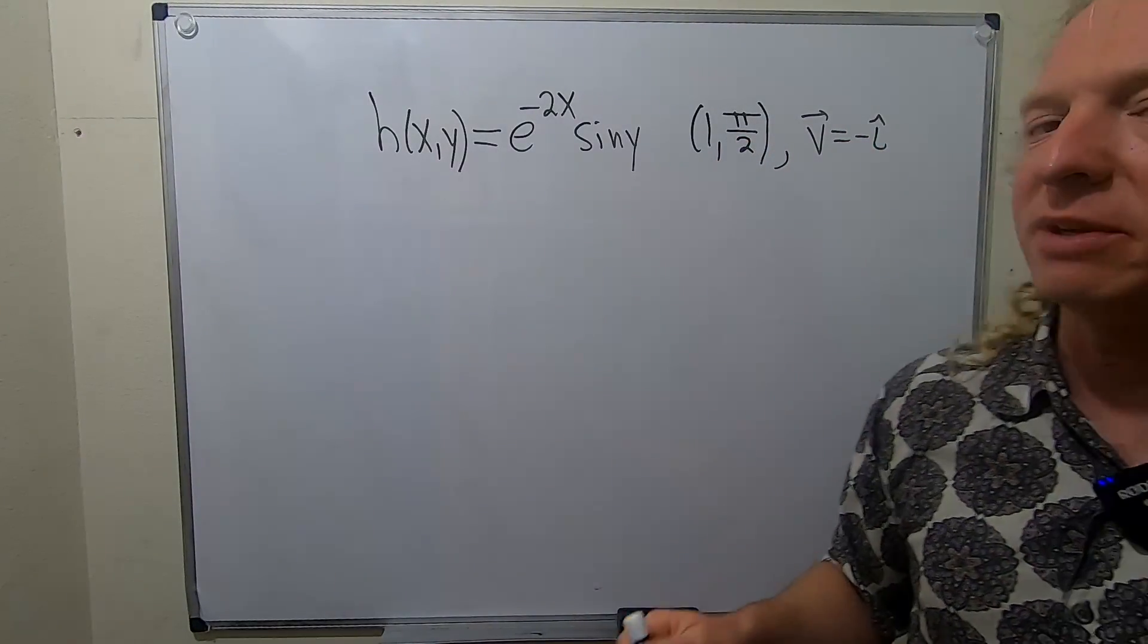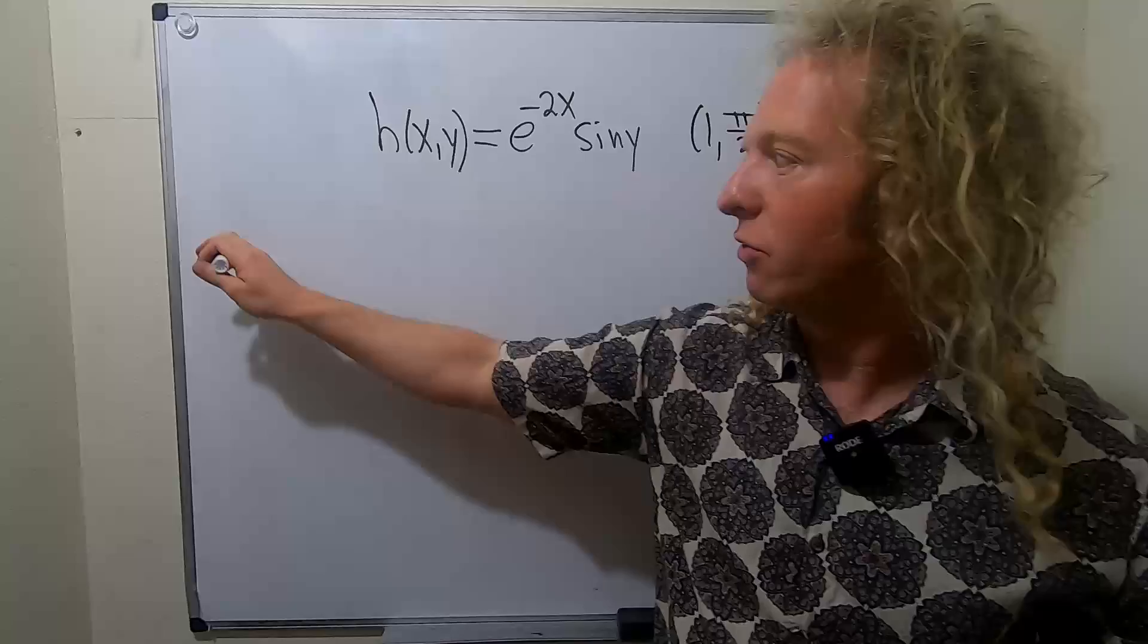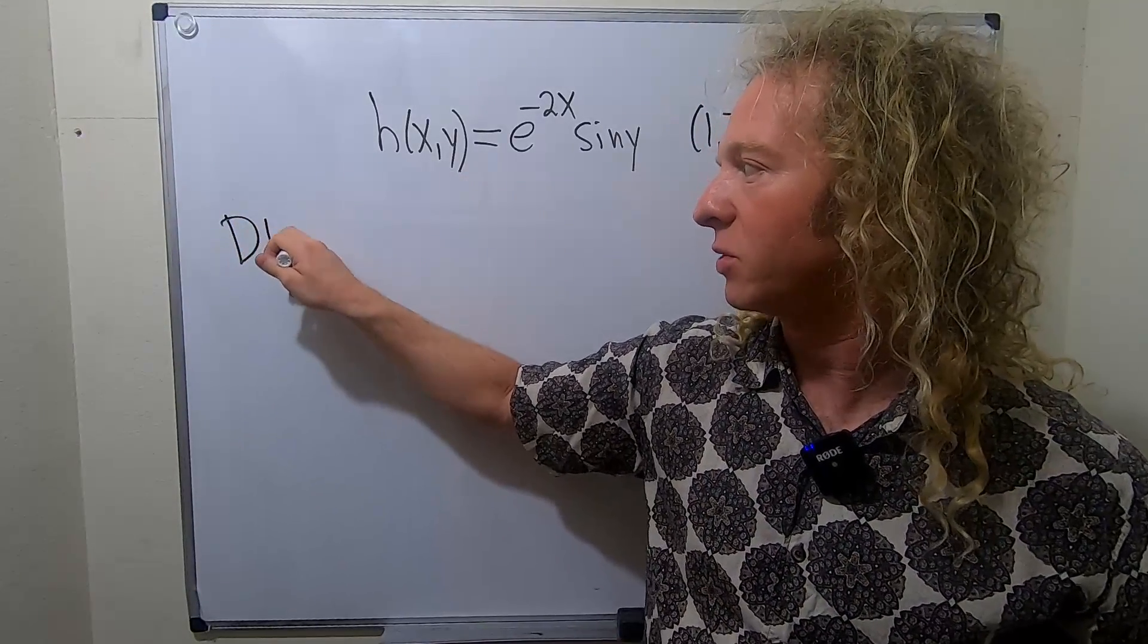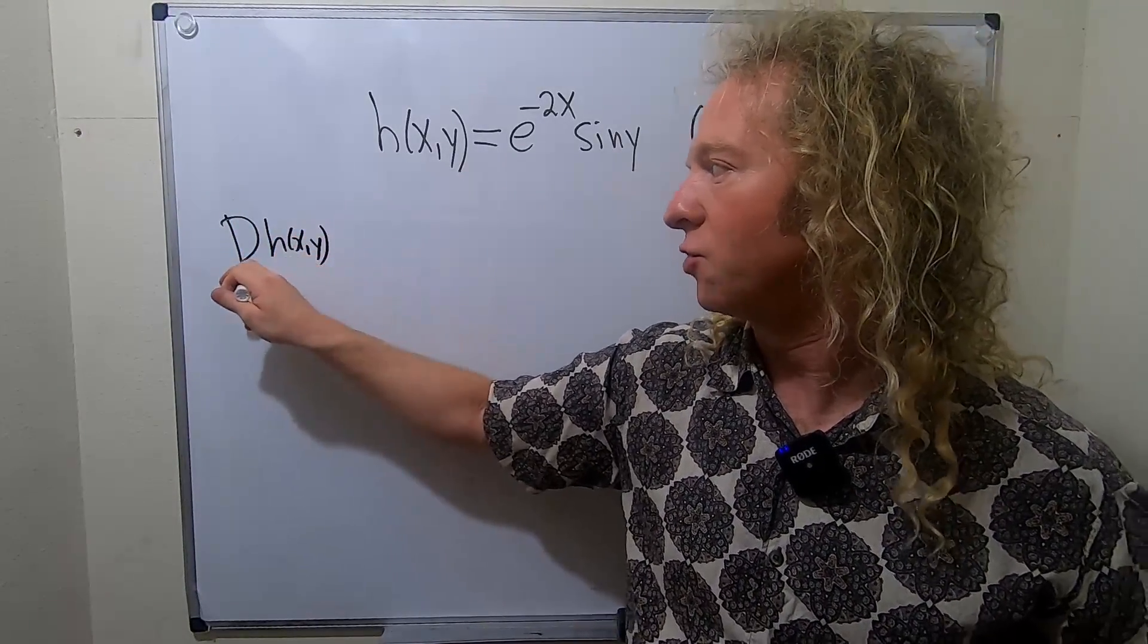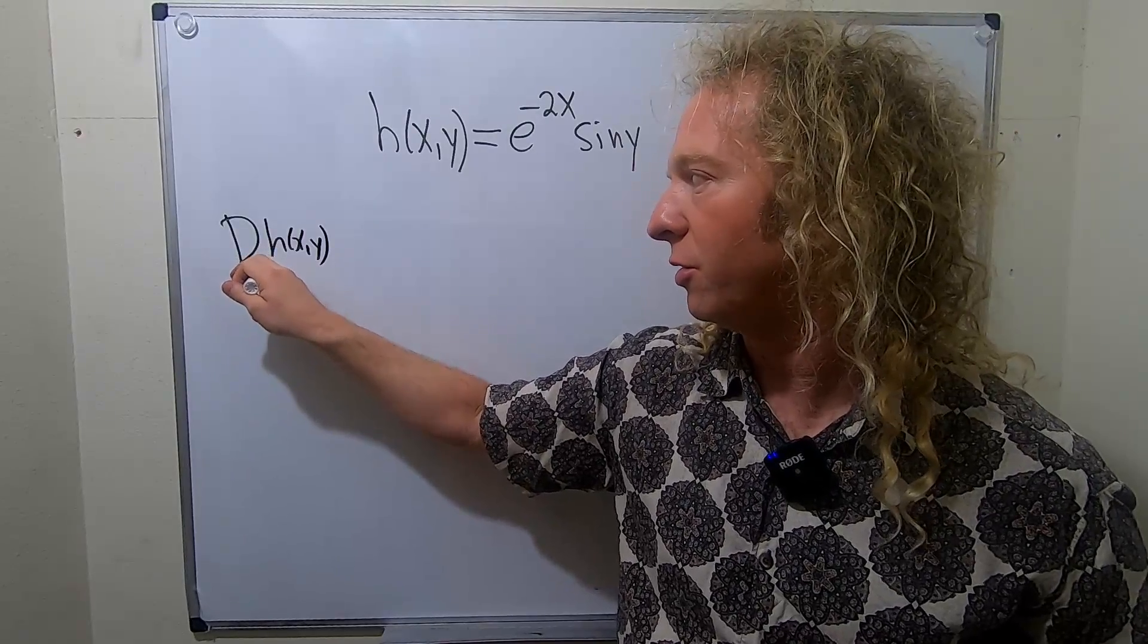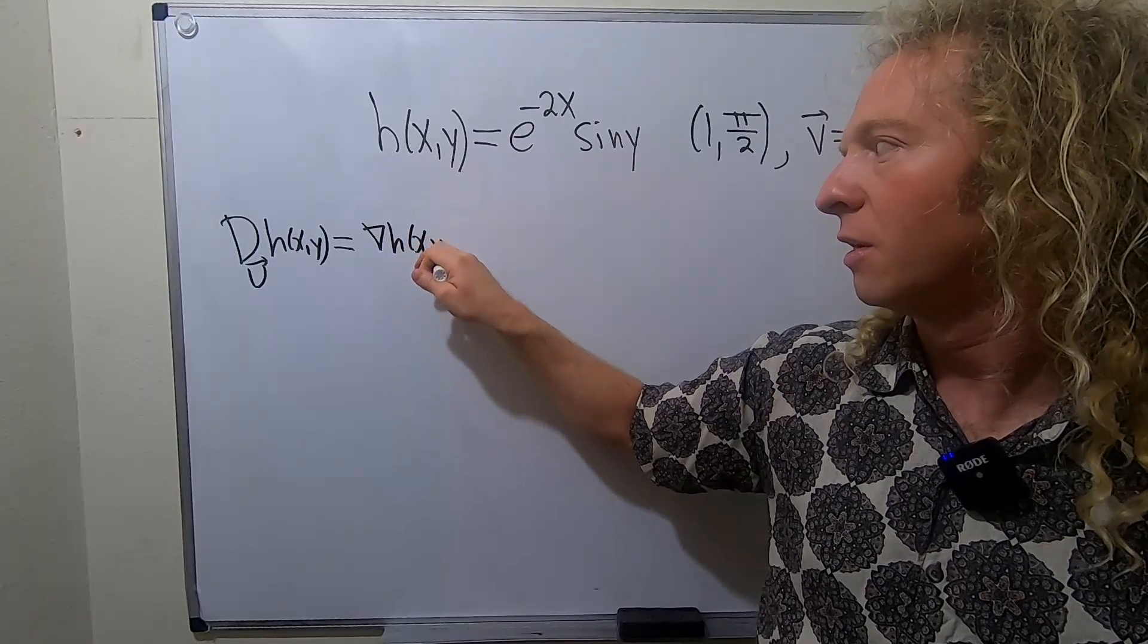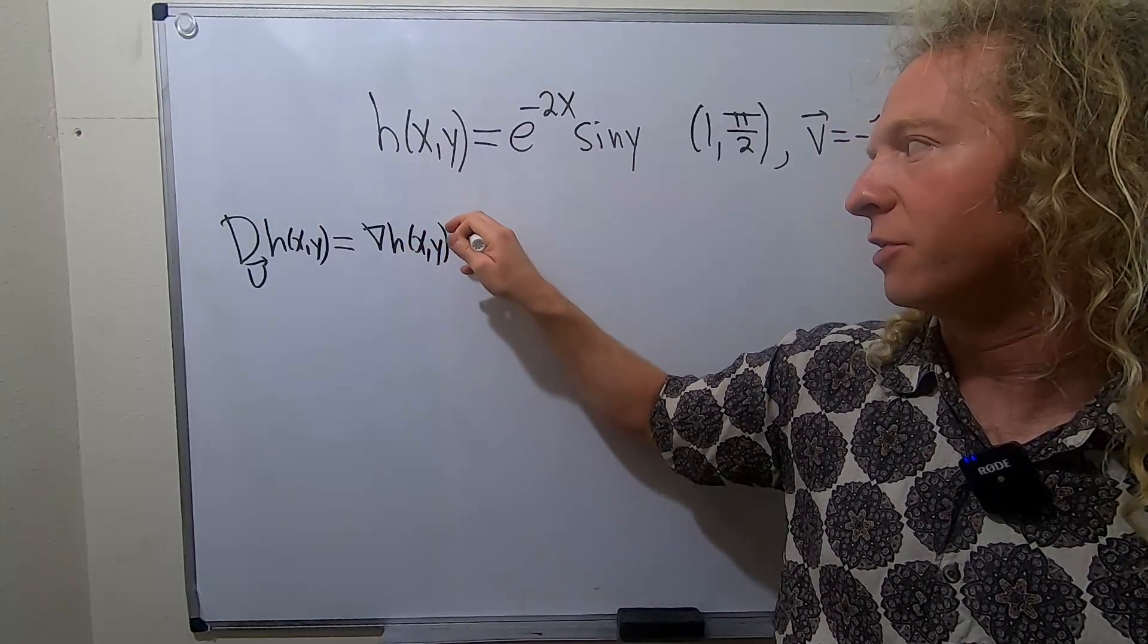So there is a formula, let me refresh your memory. The directional derivative of a function, which we'll call h of xy, in the direction of a unit vector, which I'll call u, is equal to the gradient of h dotted with our unit vector u.